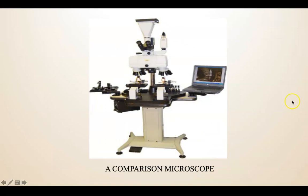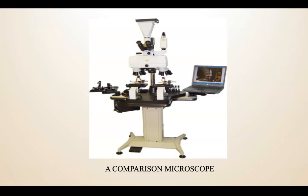The comparison microscope is the actual tool used in forensic ballistics. It compares two specimens simultaneously, kept under two objectives — left and right — and shows the result on screen or through the ocular unit. The comparison microscope is the basic tool used by the forensic ballistic expert to identify class and individual characteristics of the cartridge case and projectile.